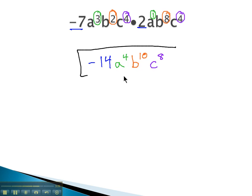And we get our final product, negative 14, a to the 4th, b to the 10th, c to the 8th. When multiplying with variables, we simply add the exponents on each variable.